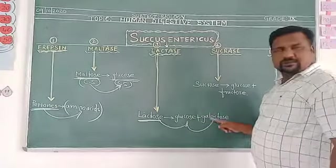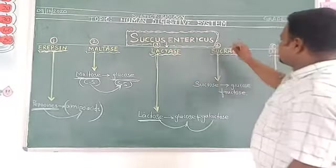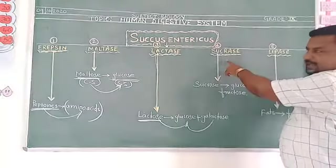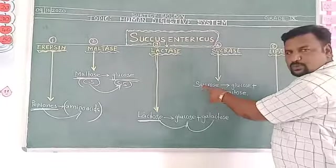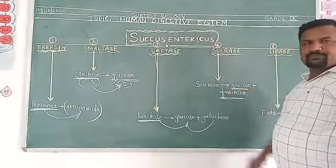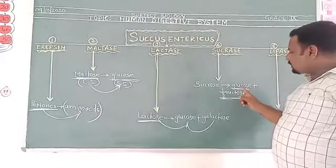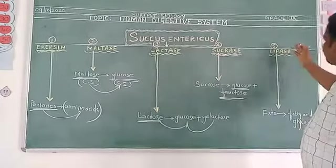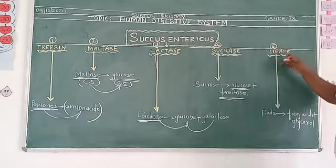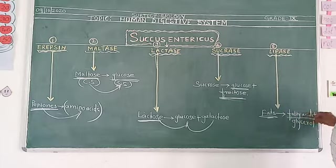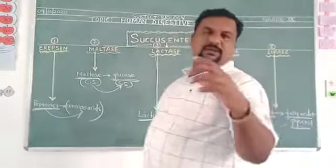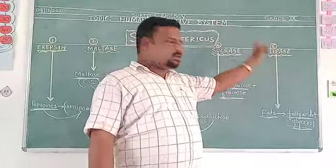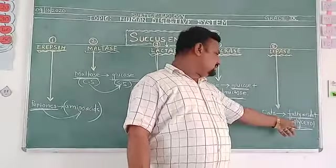The fourth enzyme, sucrase, converts sucrose into glucose and fructose — fructose is the sugar present in fruits. The fifth enzyme, lipase, converts fats into fatty acids and glycerol. The fat molecule is broken down into fatty acids and glycerol by the action of lipase.